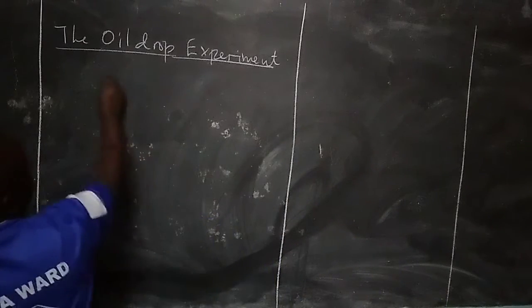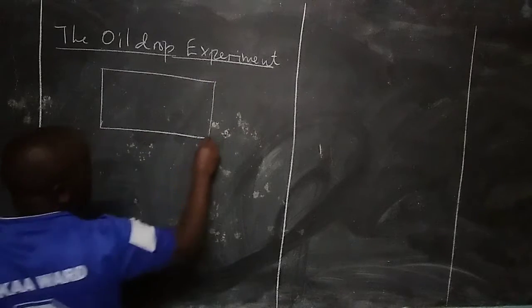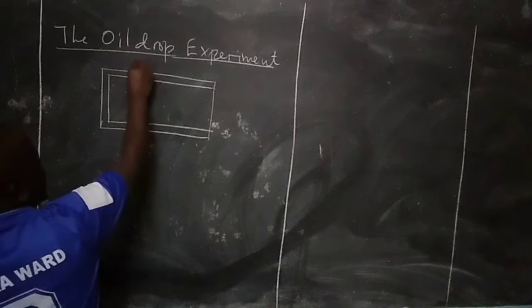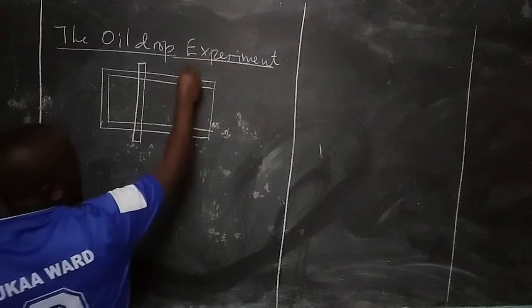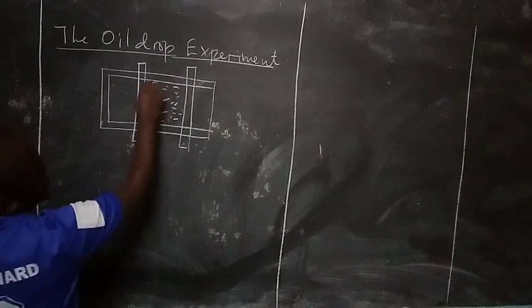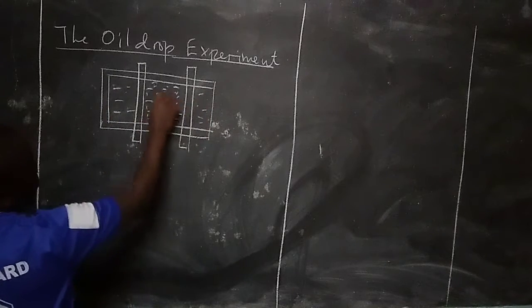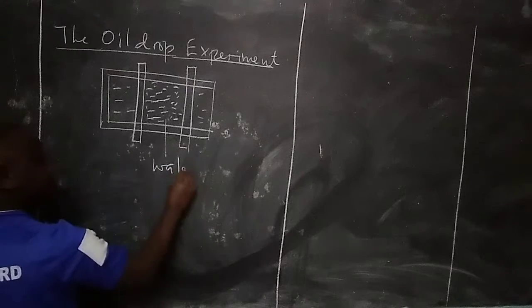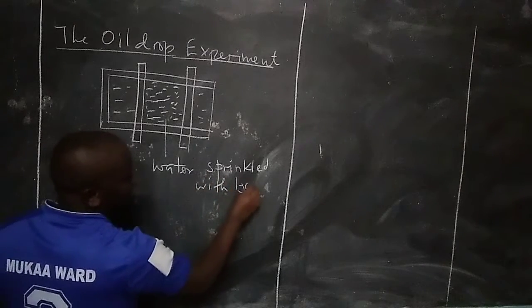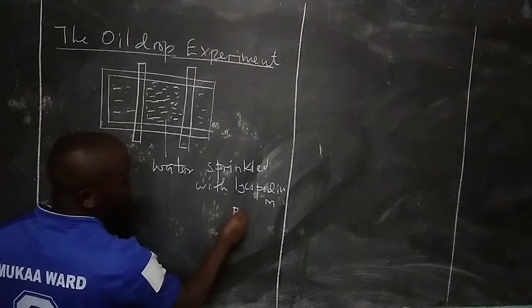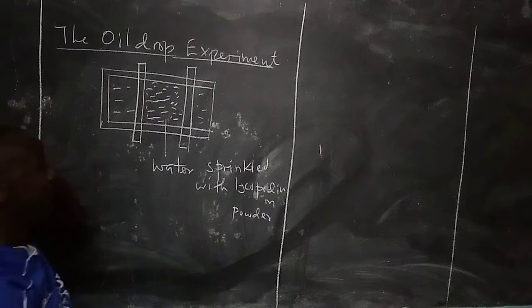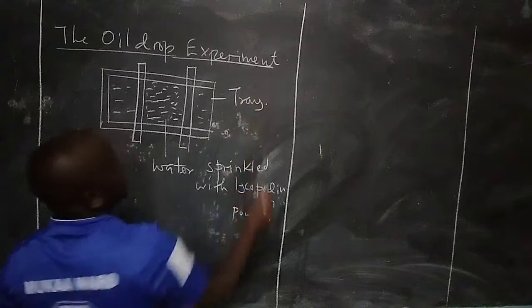We usually have a tray in this experiment, such that the tray is filled with water. Inside the water, we add two planks of wood. Between the planks, a powder called lycopodium is sprinkled on the water. This setup is a tray filled with water with lycopodium powder sprinkled on it.